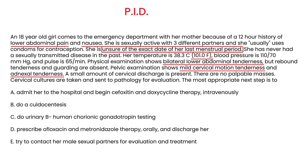When an ectopic pregnancy is suspected, the very first thing you need to do is a urine beta-hCG — and that would be the correct next step.